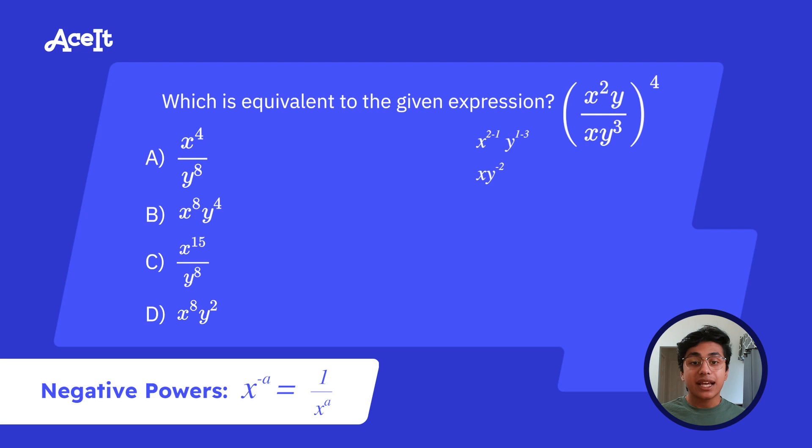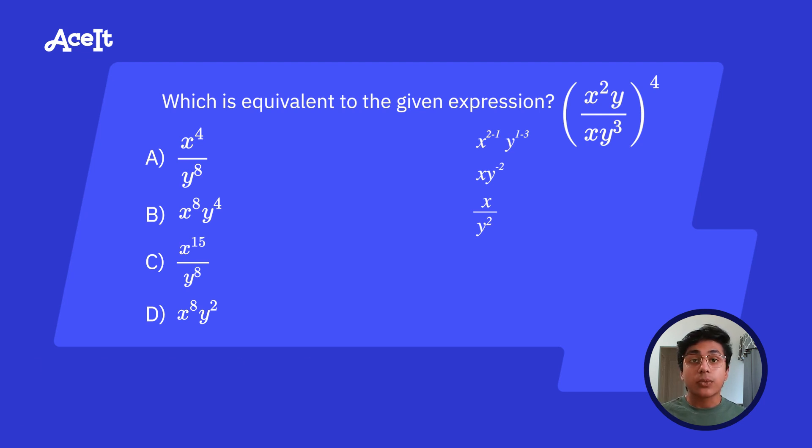Now using the negative exponent rule, we can just make this x over y squared. So now that we've simplified the inside, we can start messing with the outside exponents. So we're going to raise this expression to the power of 4, which is going to leave us with x to the fourth over y to the eighth, which is answer choice A.